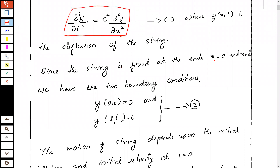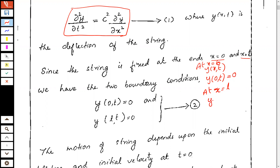Since the string is fixed at both ends, x=0 and x=L, there is no displacement at those points. At x=0, y(0,t)=0 since the endpoint is tied. Similarly, at x=L, y(L,t)=0 since the second endpoint is also tied, meaning there is no displacement at any time.